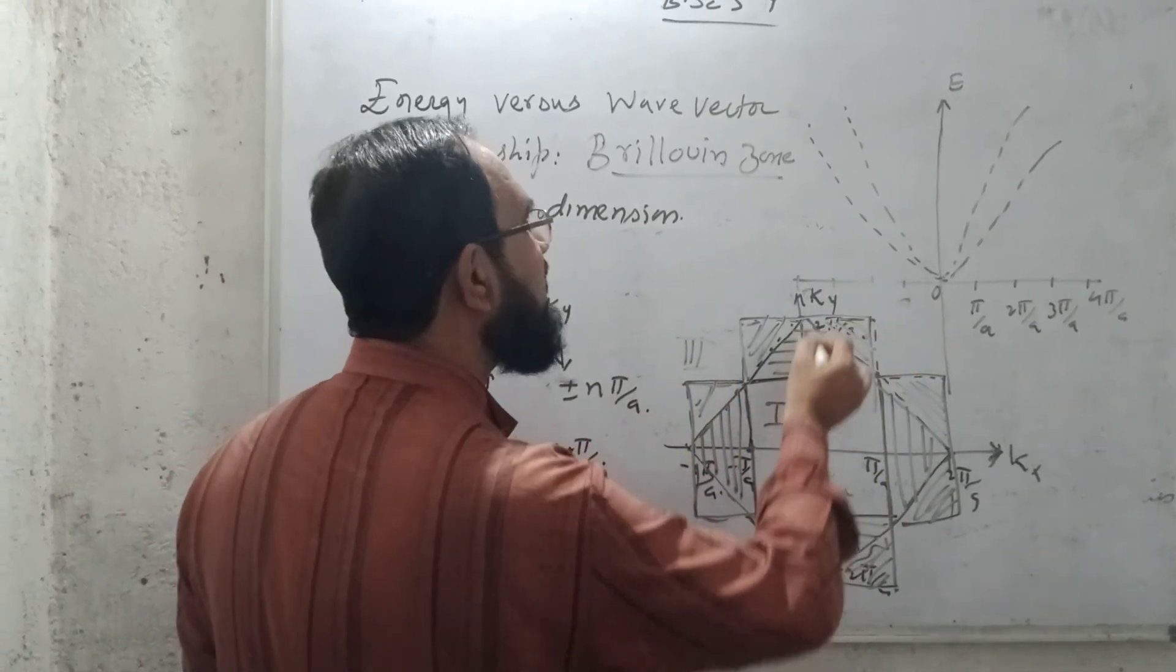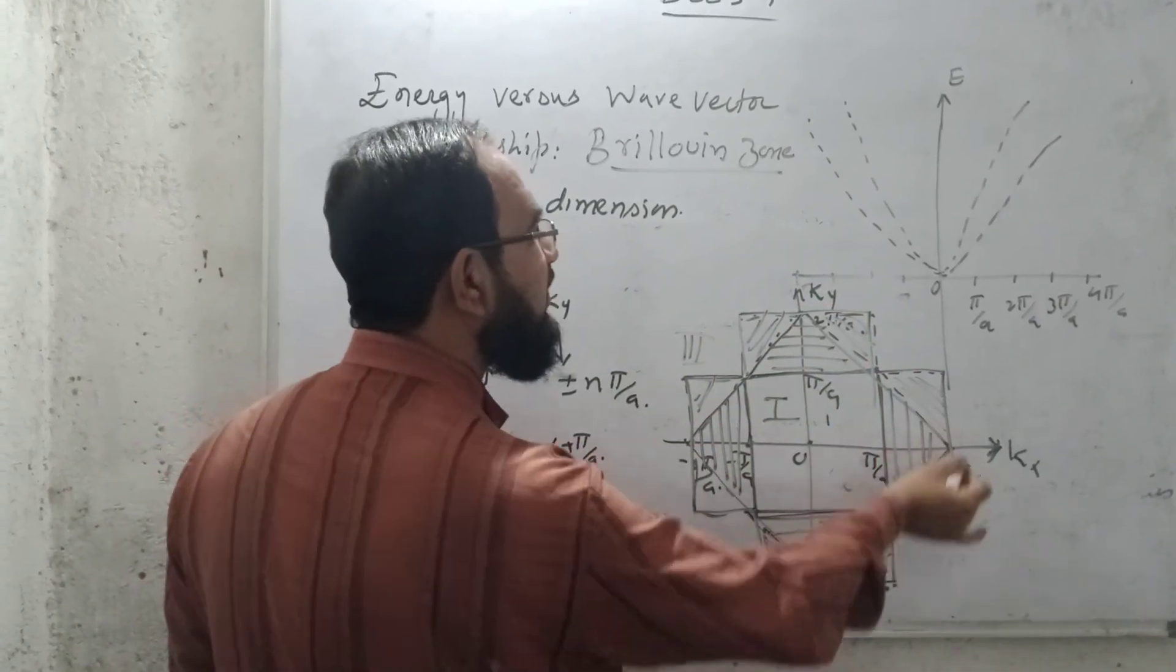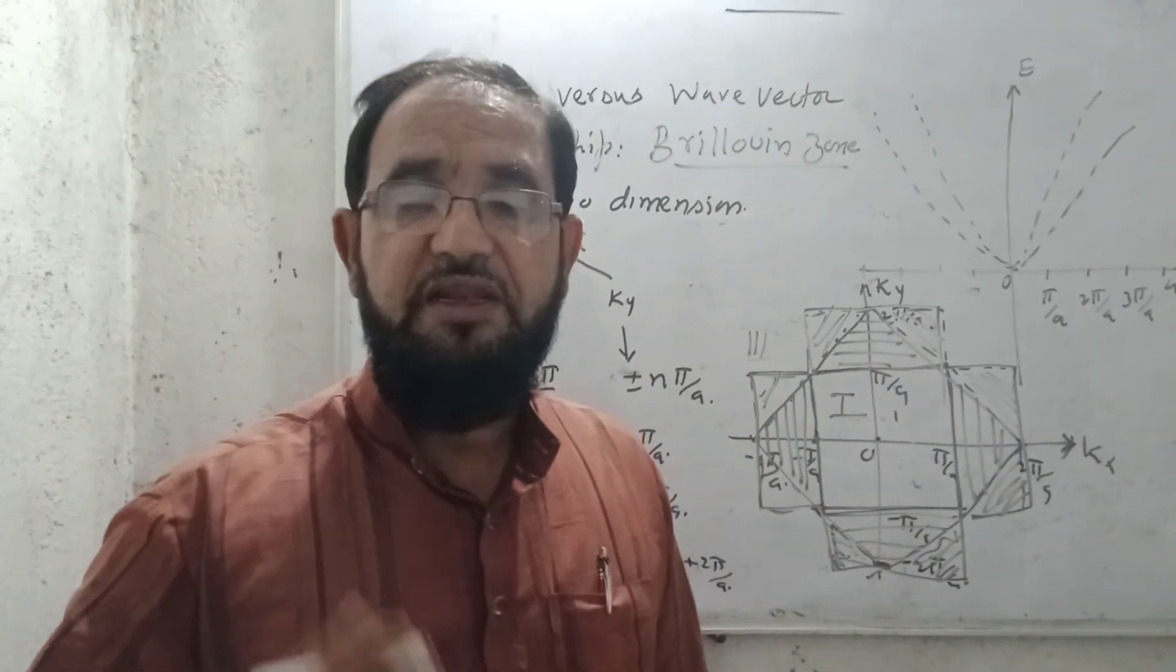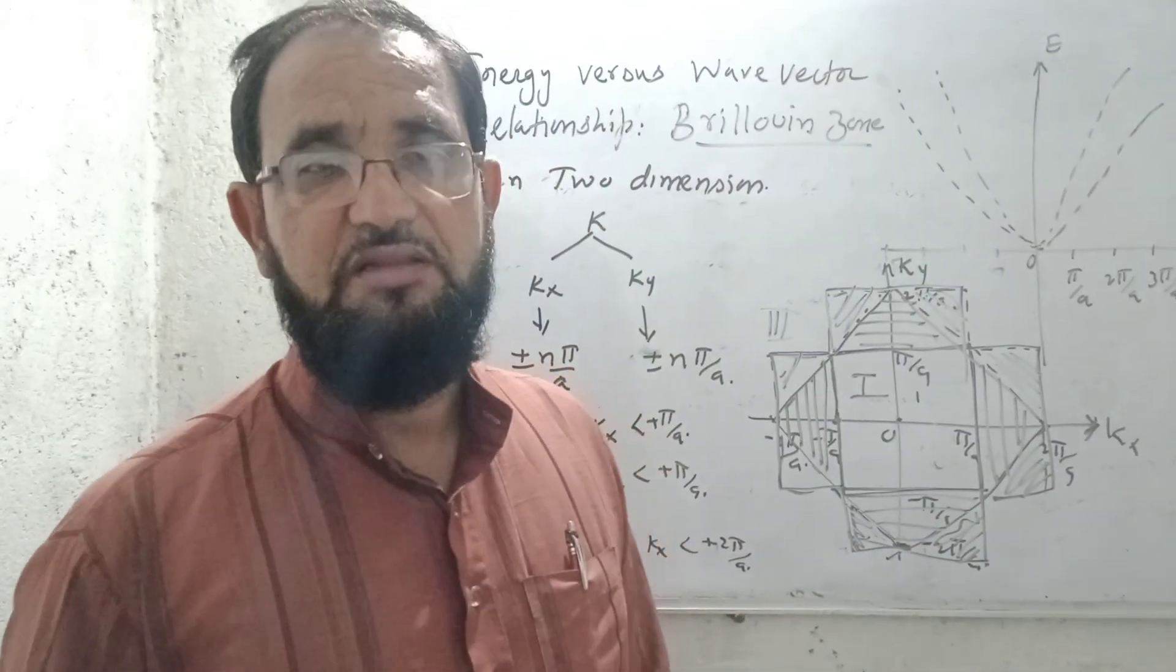It is called as the third Brillouin zone. So outermost is the third, and this one is the second, and the inner one is the first Brillouin zone in the two dimension. Thank you.